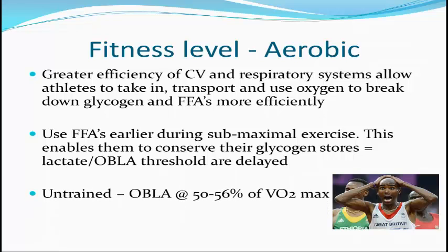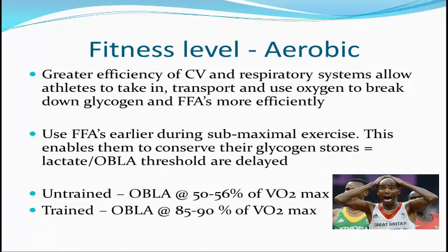In terms of fitness levels, as an untrained athlete I am able to exercise at 50 to 56% of my VO2 max before I hit OBLA. However, Mo, being the trained athlete that he is, is able to exercise at 85 to 90% of his VO2 max before he hits OBLA. That shows how Mo can exercise at a much higher intensity before he hits the wall and lactic acid production exceeds the speed of removal.